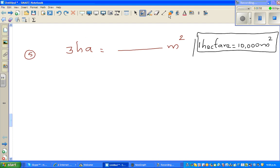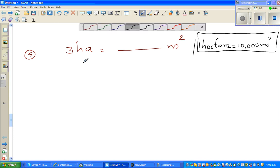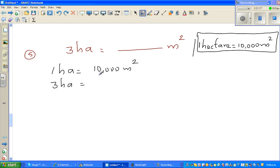So I want to convert these hectares into meters squared. This is pretty simple. Use this formula. One hectare is 10,000 meters squared, so three hectares would be three times this, which is 30,000 meters squared.